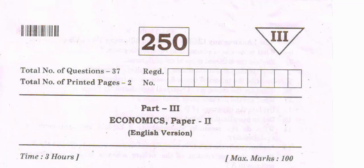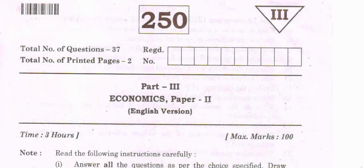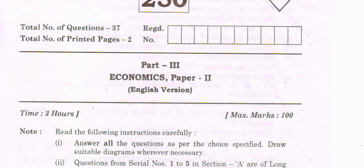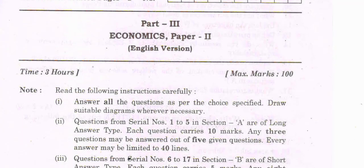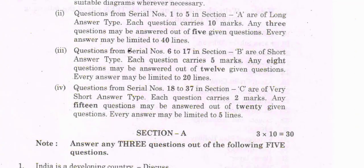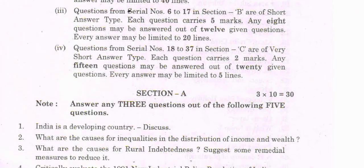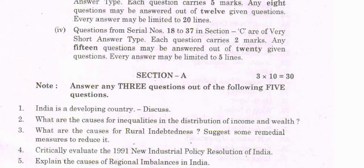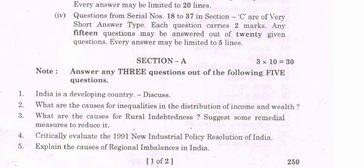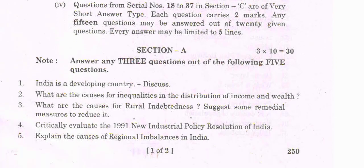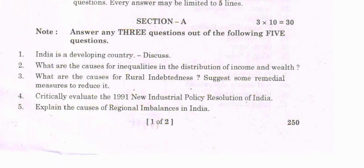Hi students. Intermediate Second Year Economics paper — the examiner's purpose is a 100 marks paper. The main thing is to practice exact questions. Section with 3 questions worth 10 marks each is equal to 30 marks.